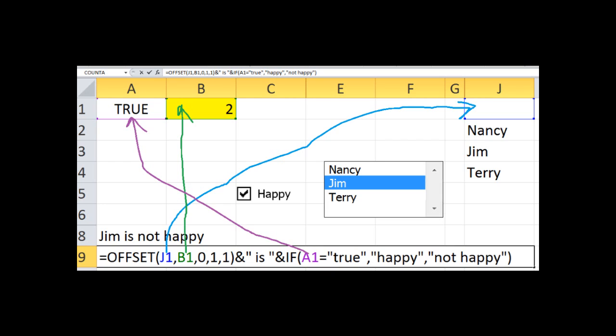Equal symbol, OFFSET, O-F-F-S-E-T, begin your parentheses. Now, click in cell J1, then type a comma, then click in cell B1, type a comma.